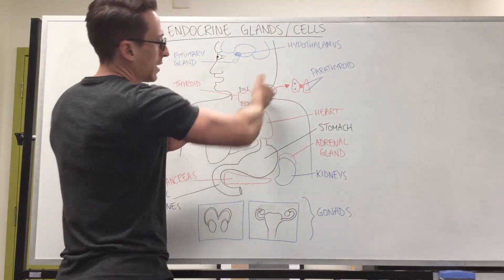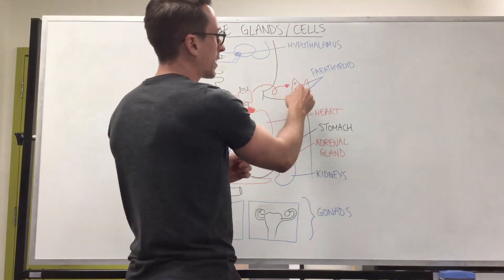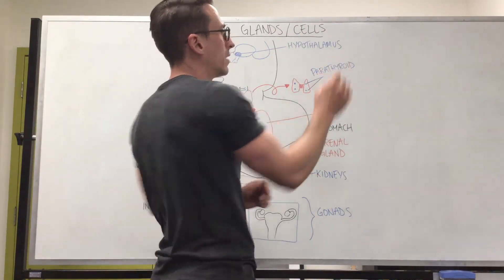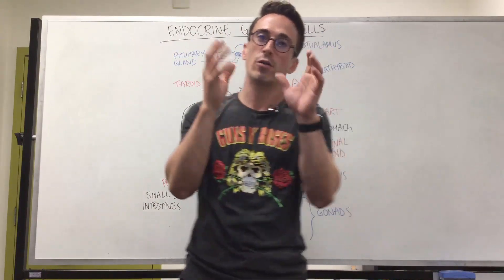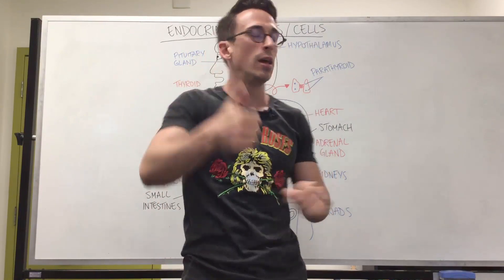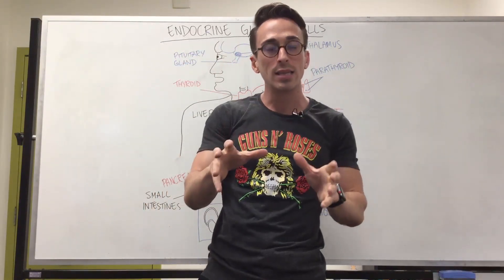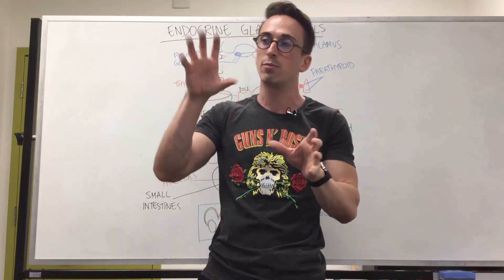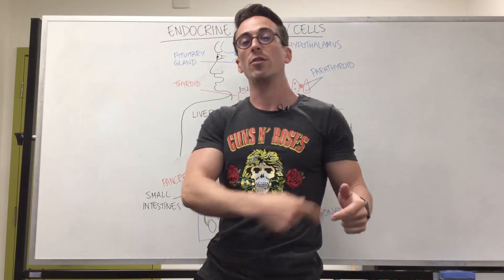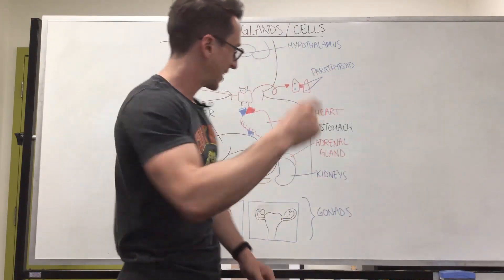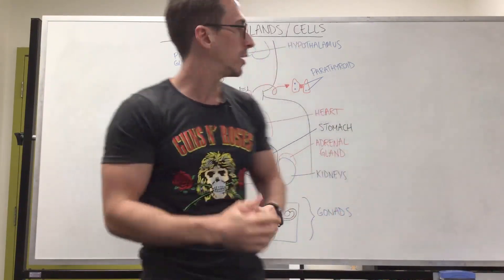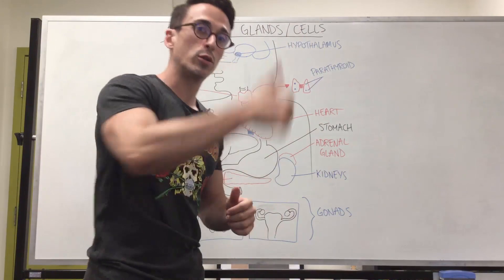If you take that thyroid gland, flip it back to front and look on the back, you can see there are usually between four to eight parathyroid glands stuck on the back of it. The parathyroid gland releases parathyroid hormone, which plays a role in calcium homeostasis. If we need more calcium in the blood, parathyroid hormone is released and tells osteoclasts in our bones to break bones down and release calcium into the bloodstream. It also tells the intestines to absorb more calcium and the kidneys to stop excreting calcium in the urine — a three-pronged attack to boost calcium levels in the blood.